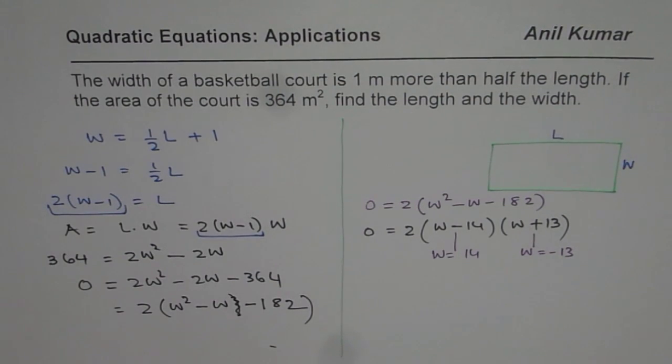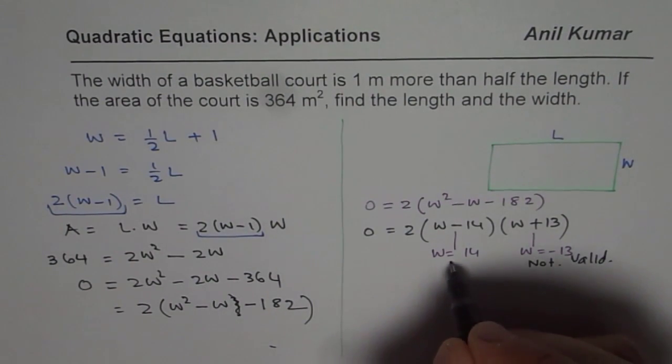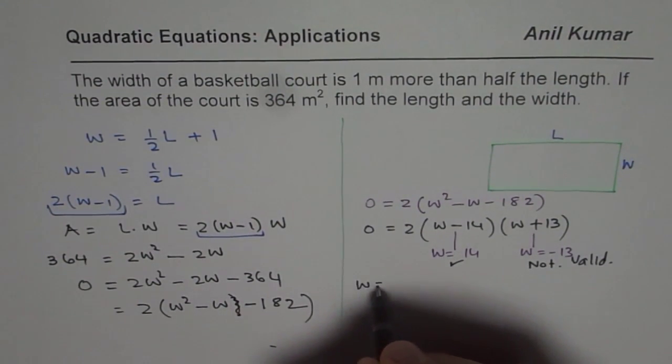But since minus 13 is not valid, we are talking about dimensions of a rectangle. So it has to be positive, right? So this is valid. So we get width equals 14.